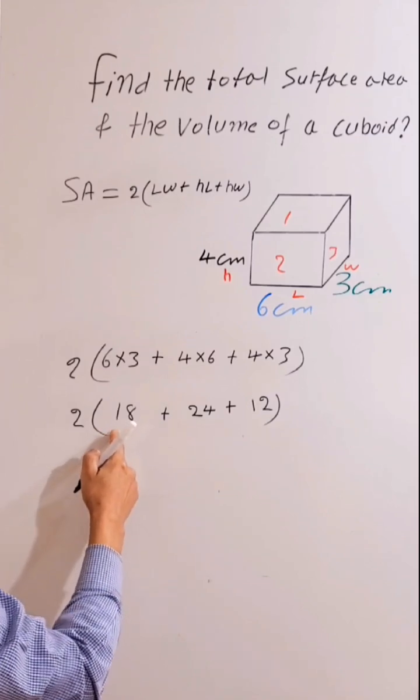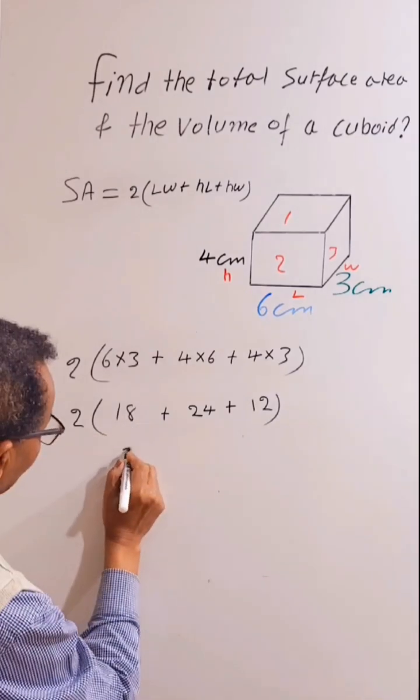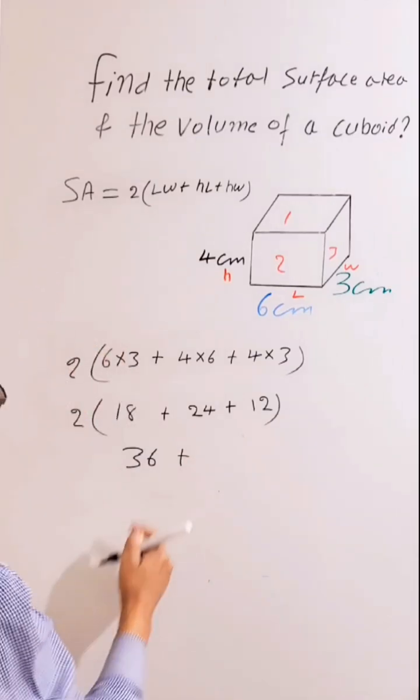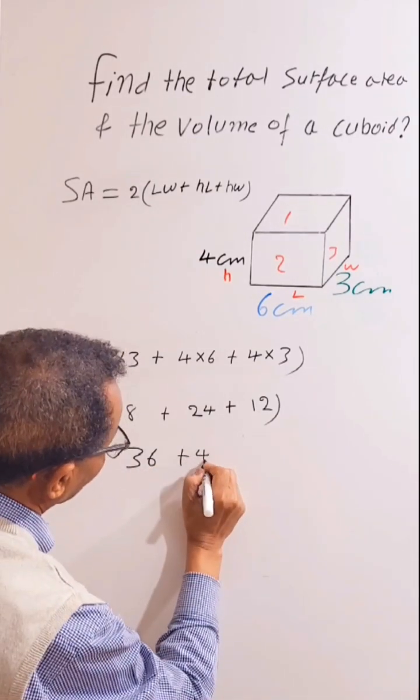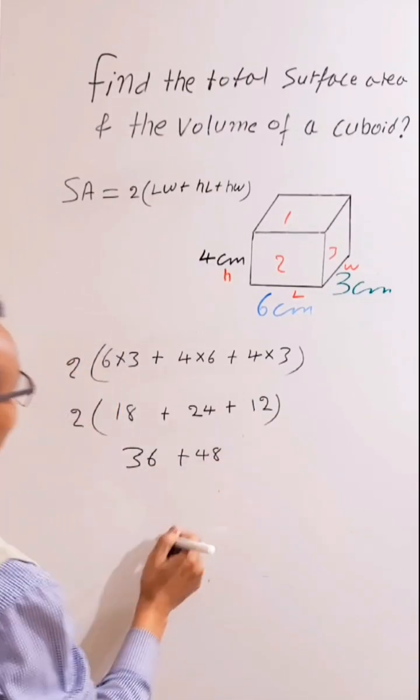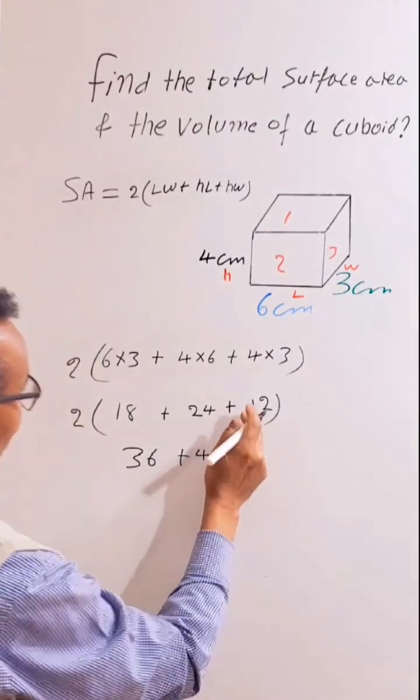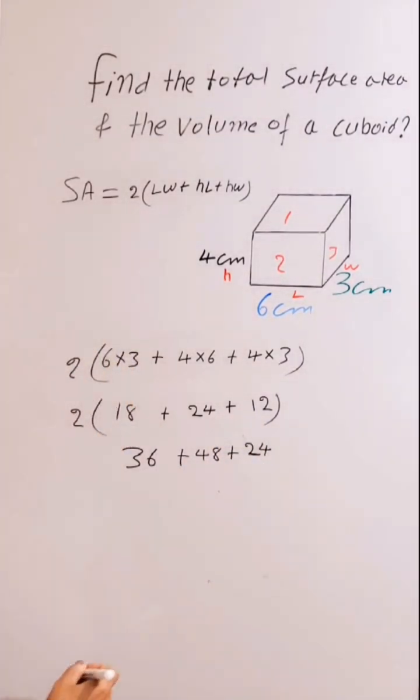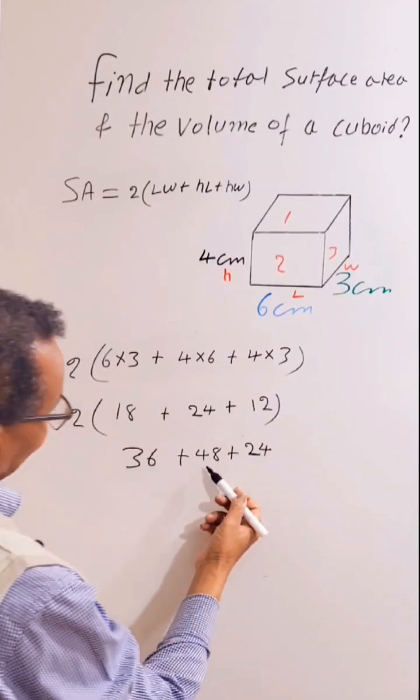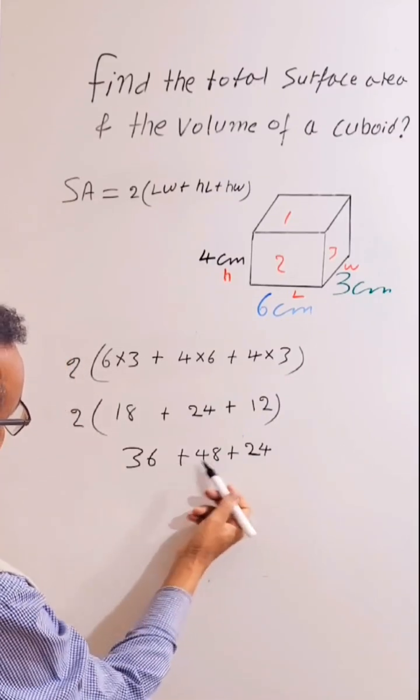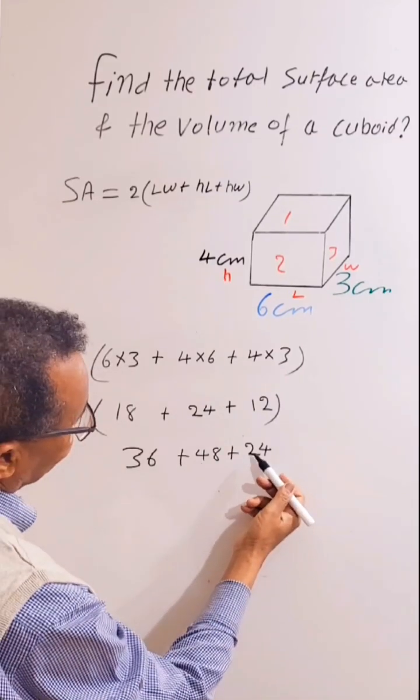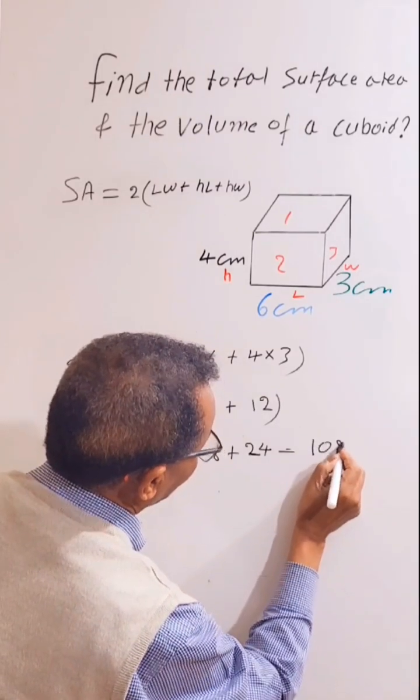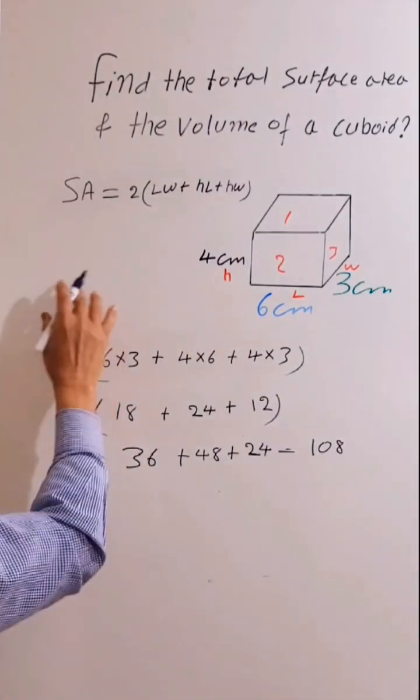So 18 times two is 36, plus 24 times two is 48, plus 12 times two is 24. So 36 plus 48 is 84, plus 24 is 108.